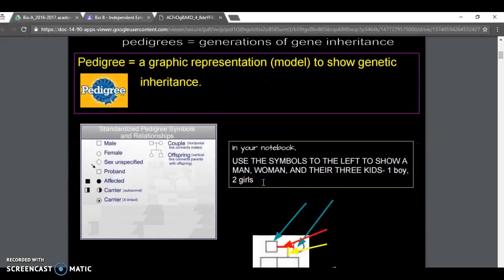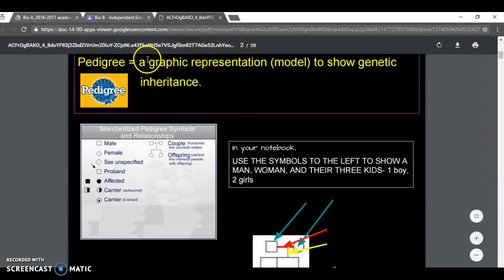So this is slide two, about pedigrees. Pedigrees are defined right here. They're a graphic representation, a model, which is a visual representation of genetic inheritance, what parents give to their children. That's just what this slide wants you to think about.